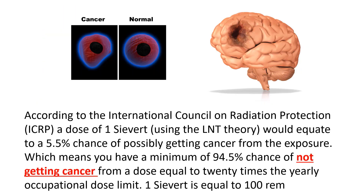We will discuss the linear no-threshold dose theory and its validity. According to the International Council on Radiation Protection, if we had a one-sievert dose — a large dose — and using the theory that all radiation is harmful no matter what, we could equate the exposure from medical imaging to approximately a 5.5 percent chance of getting cancer from that exposure. Which means you have a minimum of 94.5 percent chance of not getting cancer from this exposure.